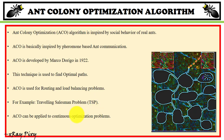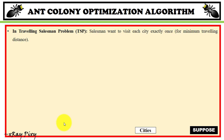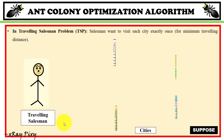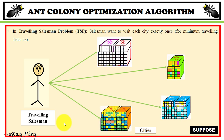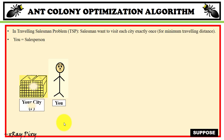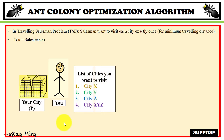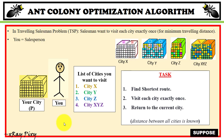In the Traveling Salesman Problem, a salesman must visit each city exactly once and travel the minimum total distance. Suppose you are a salesperson in a current city, and you have a list of cities: city X, city Y, city Z, and city XYZ. The task is to find the shortest route, visit each city exactly once, and return to the starting city. In this case, the distance between all cities is known, so the salesman can calculate and find the shortest route.